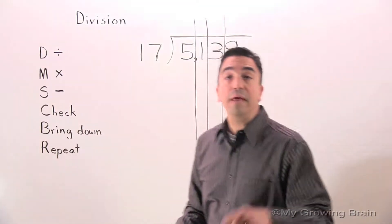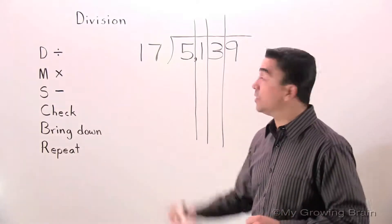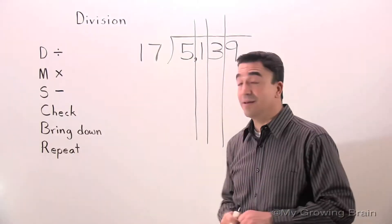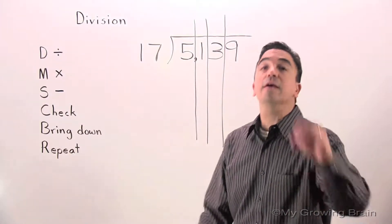First step, divide. 5 divided by 17 or 17 into 5. Can't do it. Use a zero.